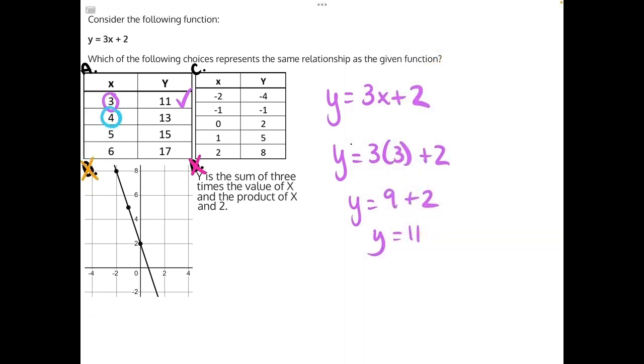y is equal to 3 times 4 is 12, plus 2 will give us 14, not 13. So answer choice A is incorrect, and that makes answer choice C by process of elimination our correct answer.